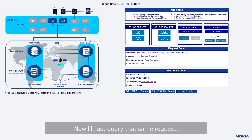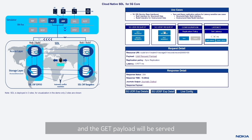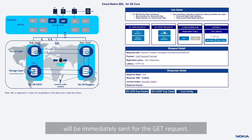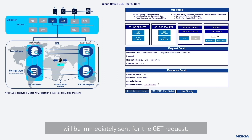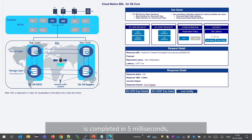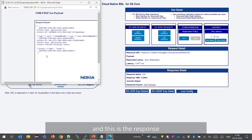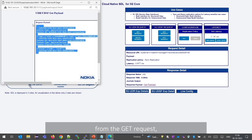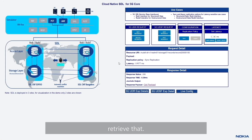Now I will query that same record using a GET request. The GET payload will be served by the local site and the response will be immediately sent. The GET request is completed in 5 milliseconds, and we were successfully able to retrieve the unstructured data record.